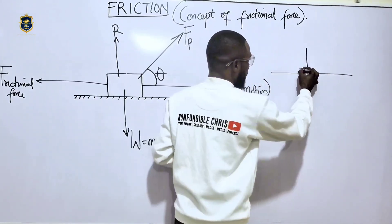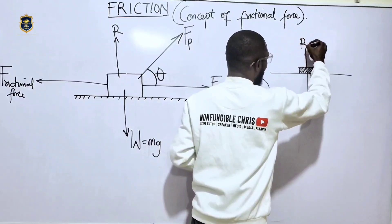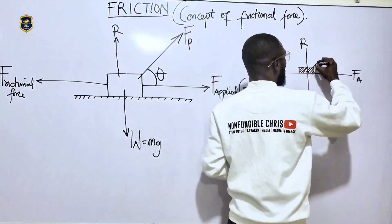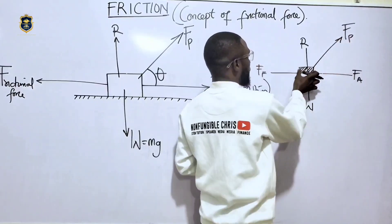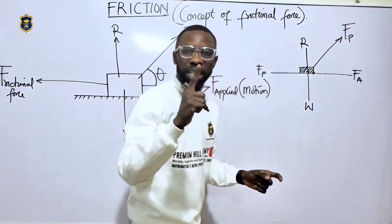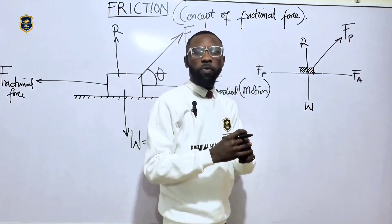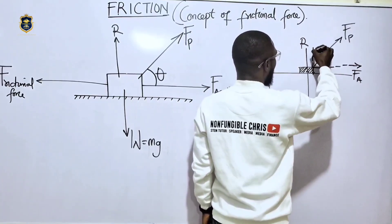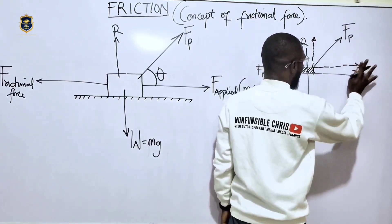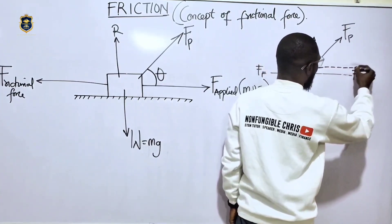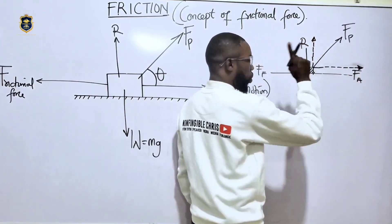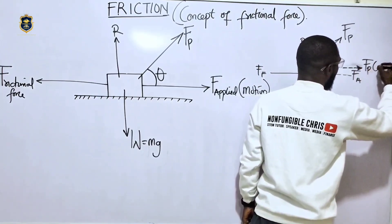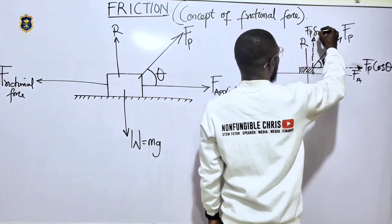In the free body diagram, we have the body, the normal reaction, the weight, the applied force, and the frictional force. When the body is pulled at an angle by force F_p, it forms two components: a horizontal axis component of F_p cos theta, and a vertical axis component of F_p sin theta.